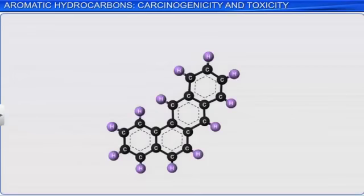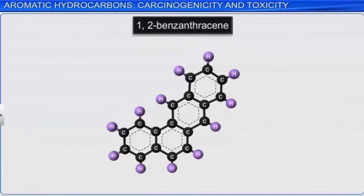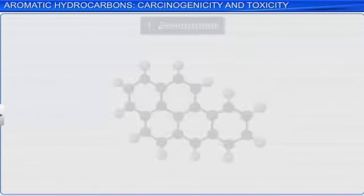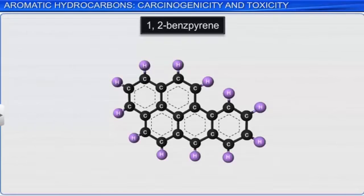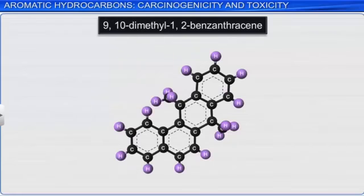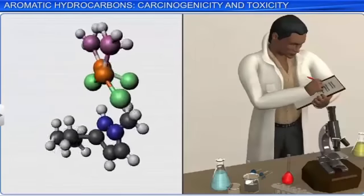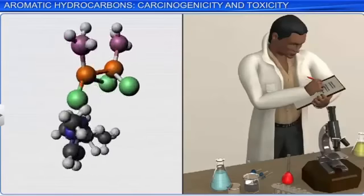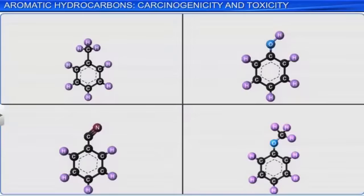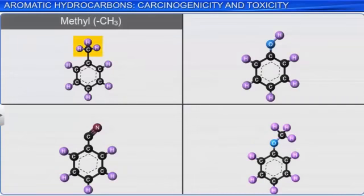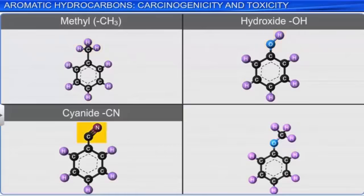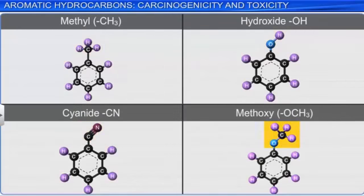Examples of polynuclear hydrocarbons that cause cancer are: 1,2-benzanthracene; 3-methylcholanthrene; 1,2-benzpyrene; 9,10-dimethyl-1,2-benzanthracene; and 1,2,5,6-dibenzanthracene. There is no general method by which we can predict which polynuclear hydrocarbons will be carcinogenic. However, it is found that the number and position of certain groups such as methyl, hydroxide, cyanide, and methoxy in these compounds give rise to carcinogenic tendencies.